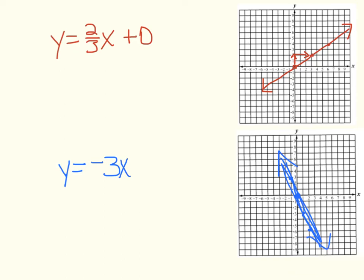Again, they go through 0, 0 and then the constant of variation is just the slope.